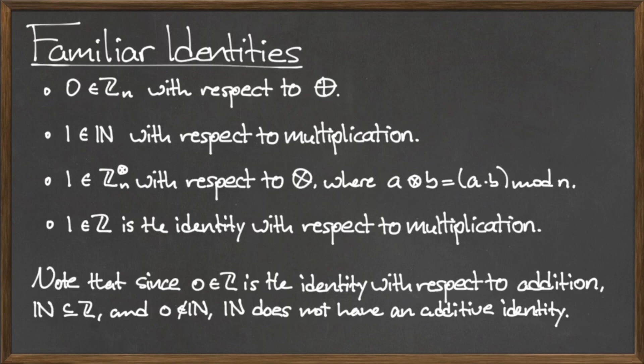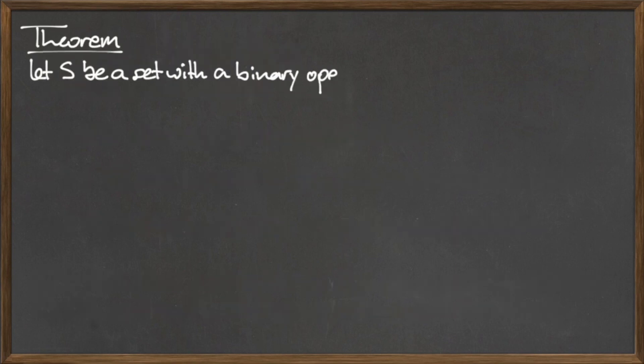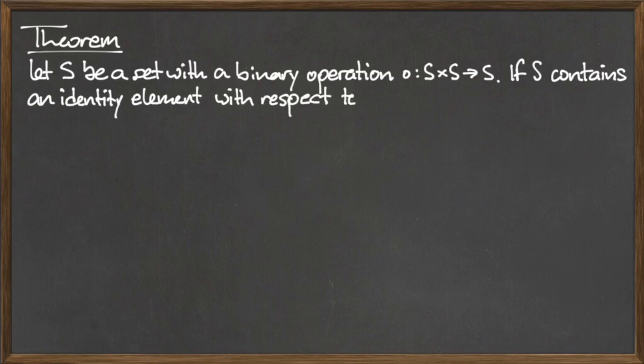One fact about identities that will become very important in later videos is that of uniqueness, which can be summarized in the following theorem. Let S be a set with a binary operation dot from S cross S to S. If S contains an identity element with respect to dot, then it is the only identity of S. In other words, the identity is unique.